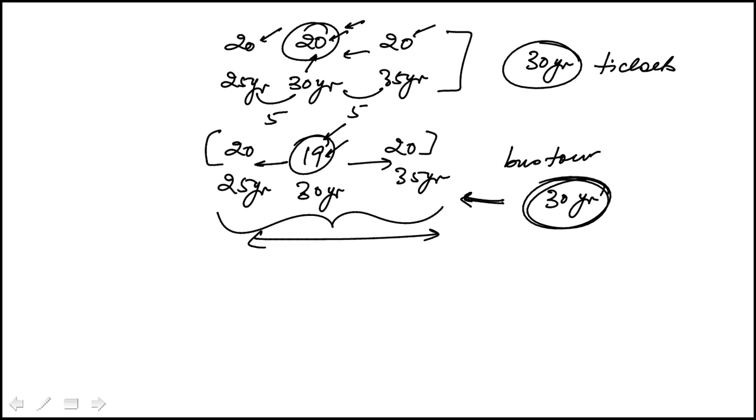So the standard deviation of the ages of the people who went on the bus tour will actually be greater than this. So if you look at the answer choices, that seems to be A.